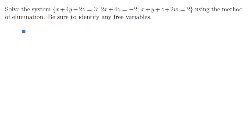Let's start by taking these three equations and writing them in the stacked row form. So we have x plus 4y minus 2z equals 3, we have 2x plus 4z equals negative 2, and we have x plus y plus z plus 2w equals 2.